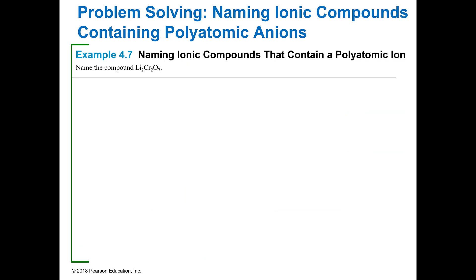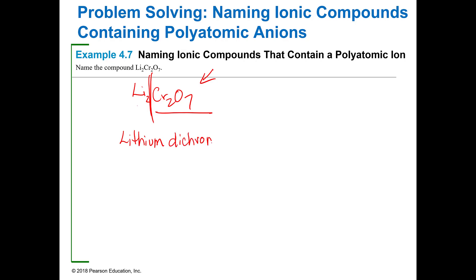Let's name Li₂Cr₂O₇. We're doing binary ionic compounds, so the first element is the metal — that's lithium, a representative element, so no Roman numerals needed. Then you look at your list and you'll see that Cr₂O₇ is called dichromate. So the whole thing is lithium dichromate. Name the metal first, and then everything after that stays together as a polyatomic ion — you name it all together.